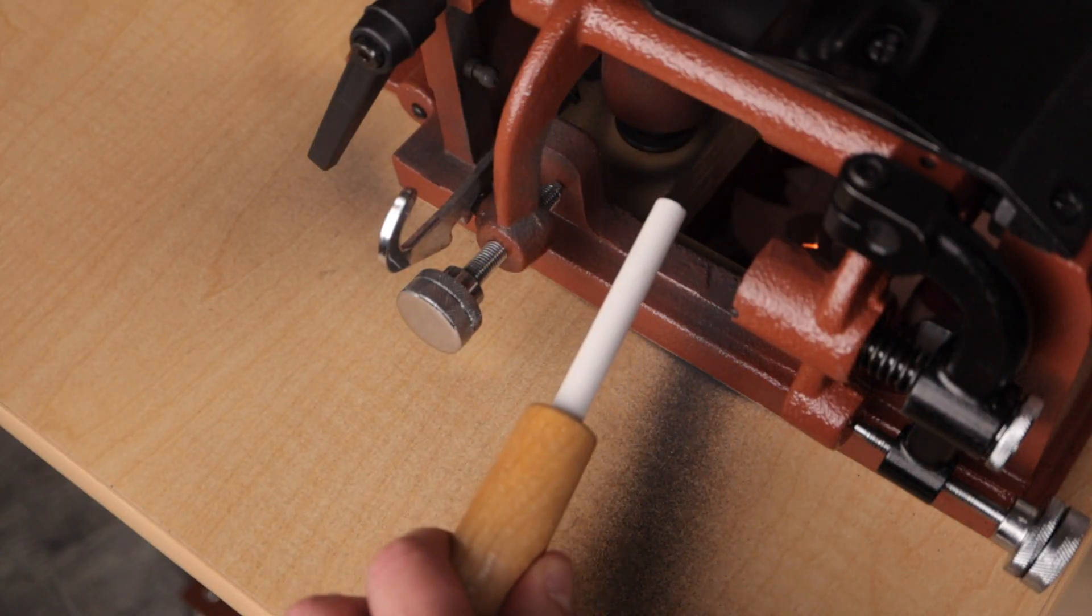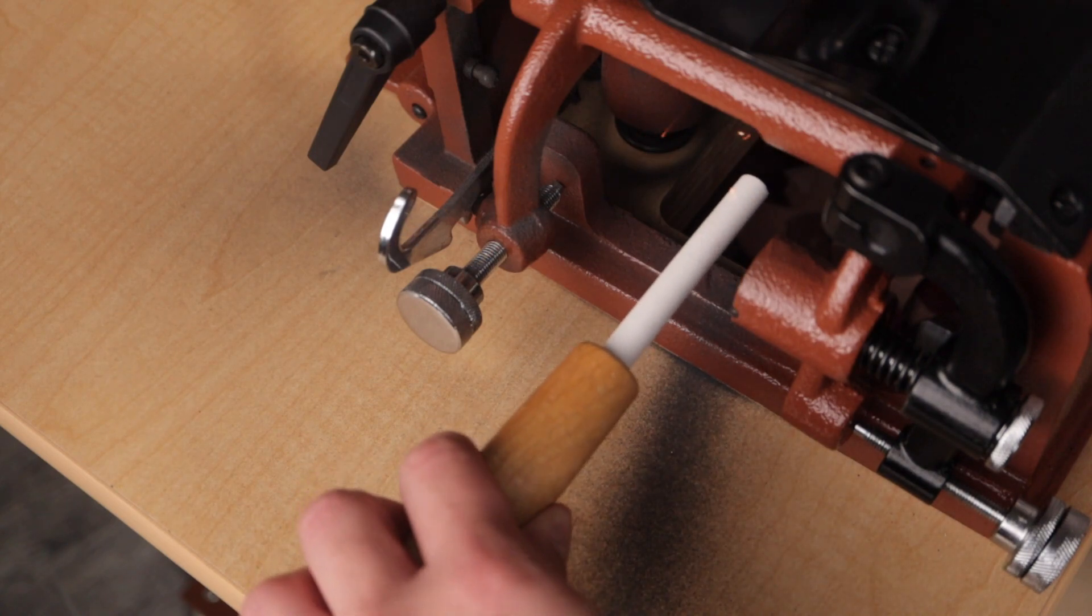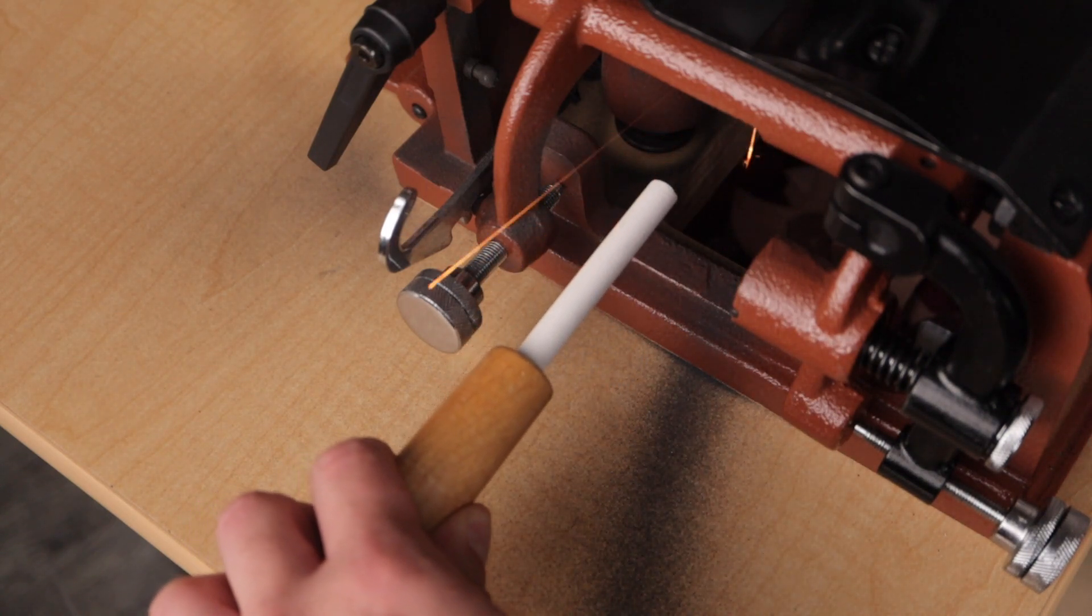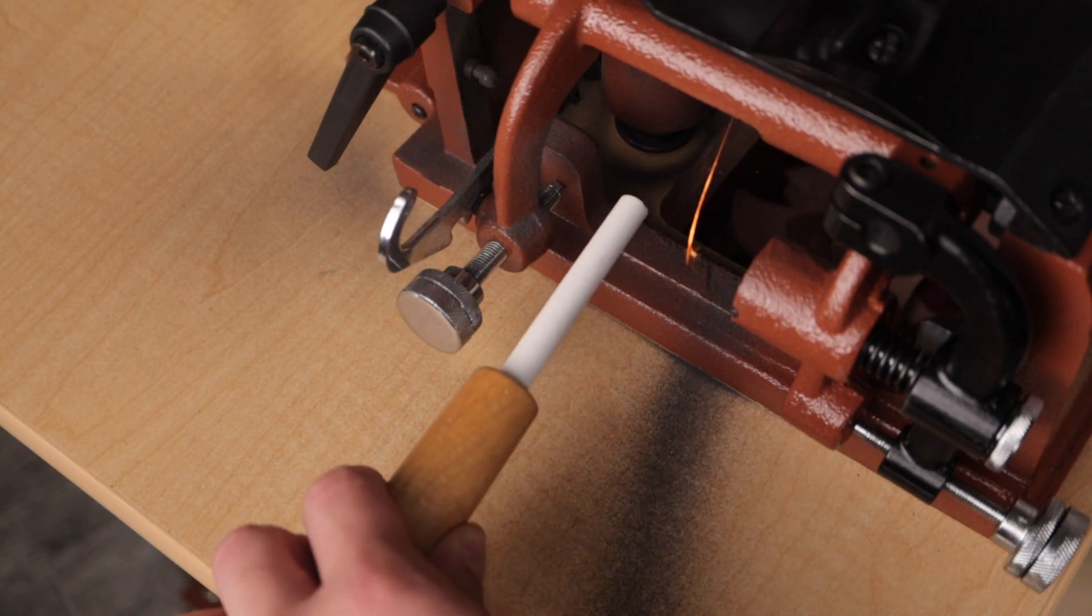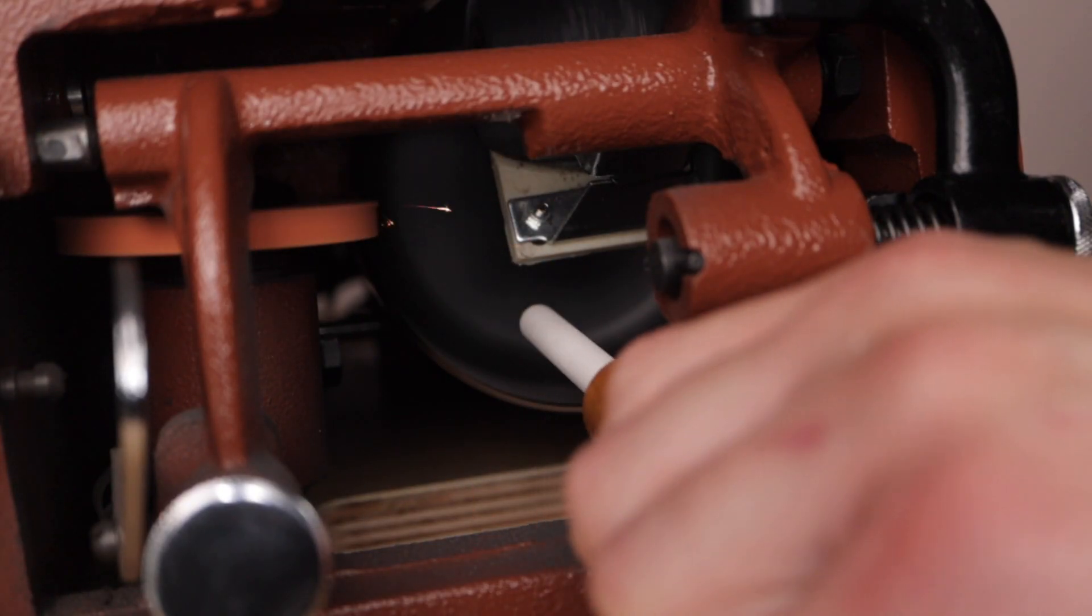Once the sparks have started to diminish, grab your grindstone stick and place it against the inside of the blade for ten seconds. Do not press hard on this. This is just a gentle process and you are simply removing any burrs on the inside of the blade.